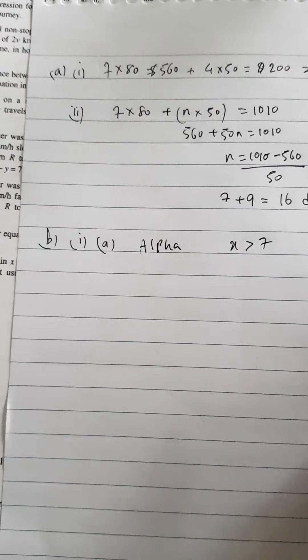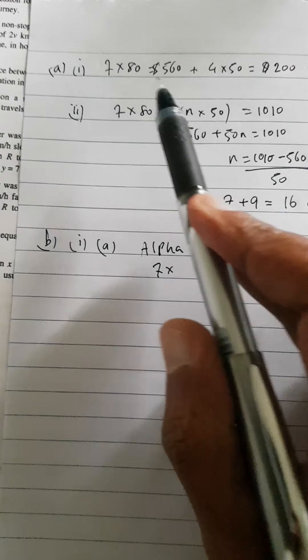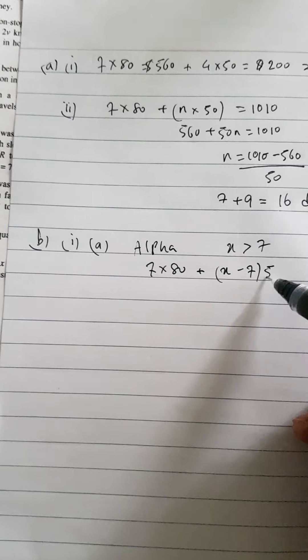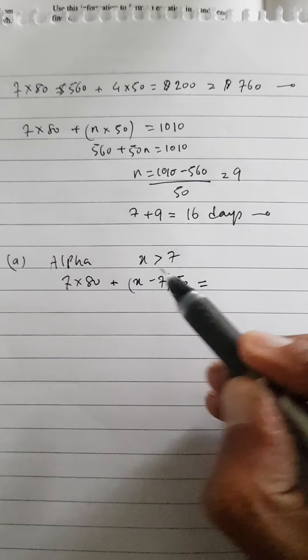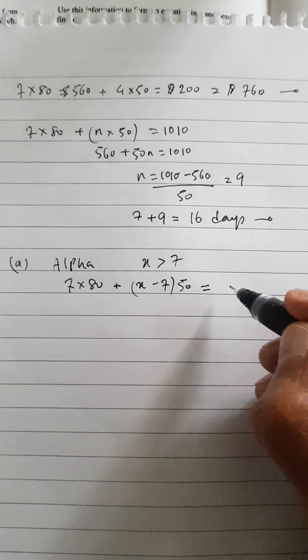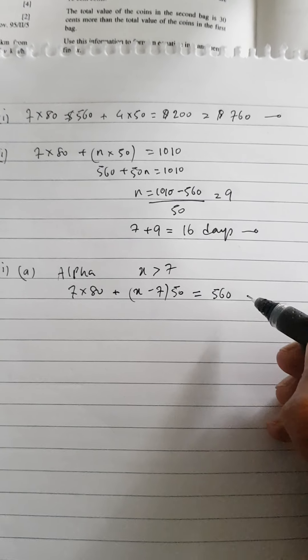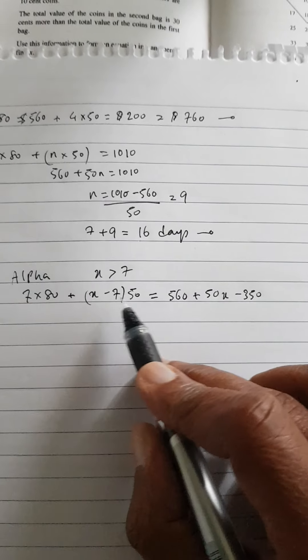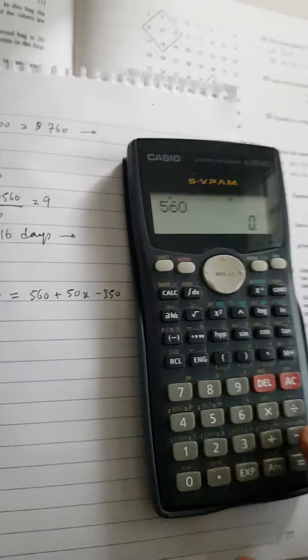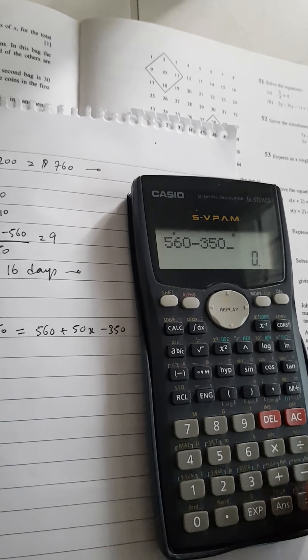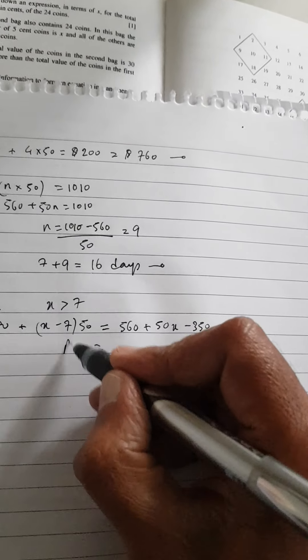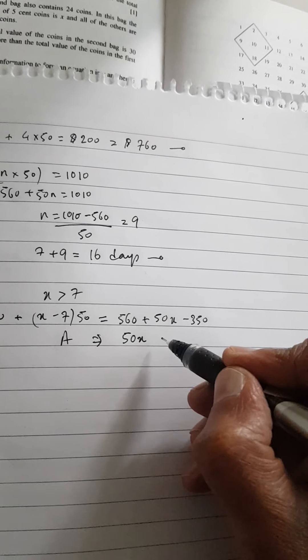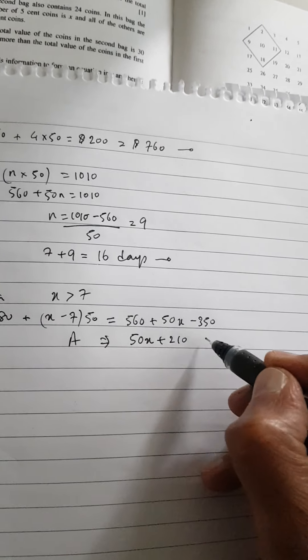How much Alpha is going to charge? Remember, X is greater than 7 days. So for the first 7 days, they're going to charge 7 times 80. Then for the extra number of days, you're going to get X minus 7 times 50. So the total charge by Alpha is 560. 50 times X is 50X, plus 50X minus 350. Because 50 times 7 is 350. So 560 take away 350. So the charge by Alpha is going to be equal to 50X plus 210.